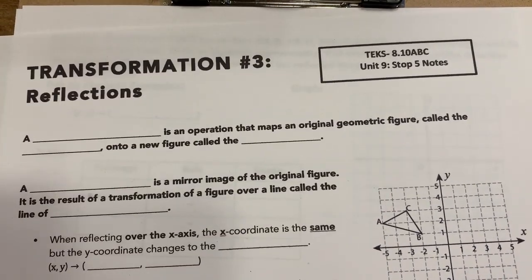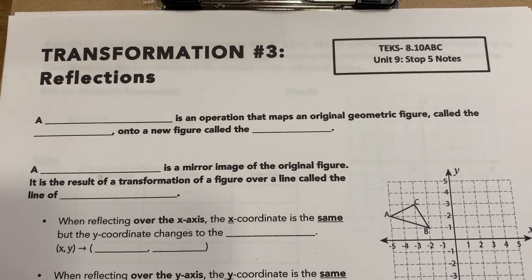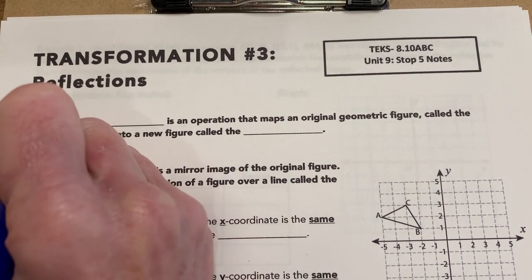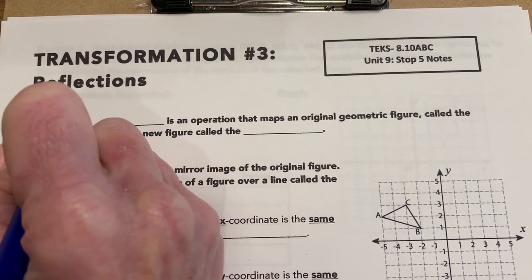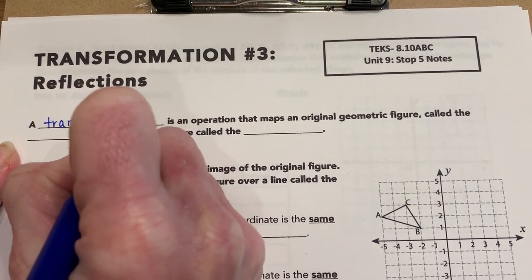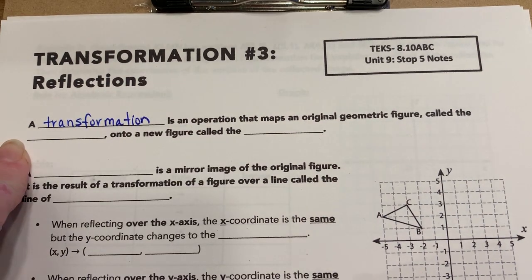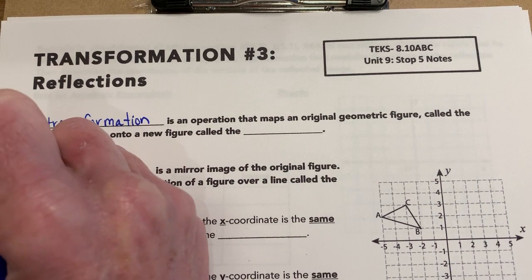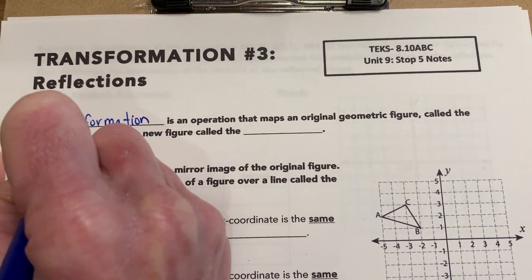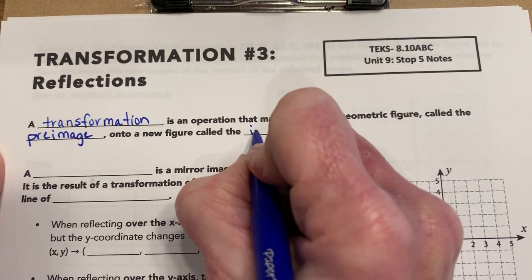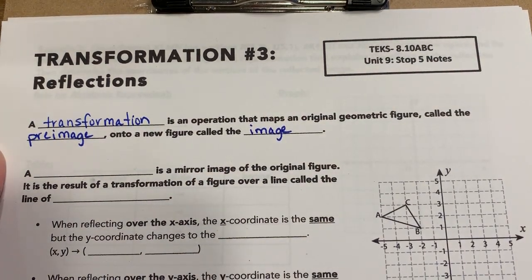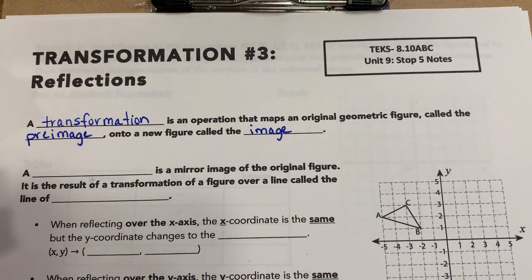In this video, we're going to be looking at our third transformation, which we're going to call a reflection. Just to review, a transformation is an operation that maps an original geometric figure called the pre-image onto a new figure called the image. All of these start with that same basic definition because these are all types of transformations.